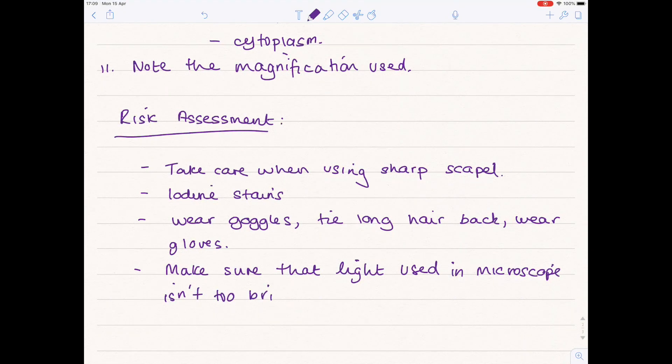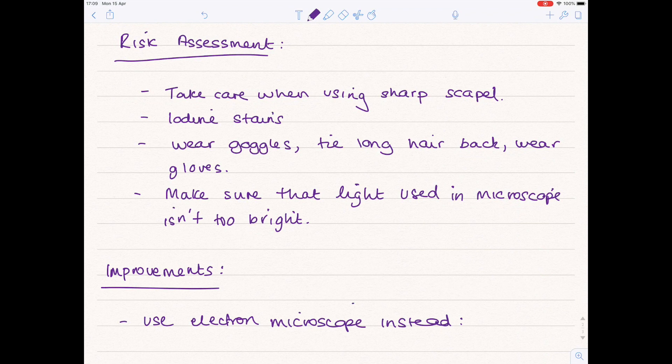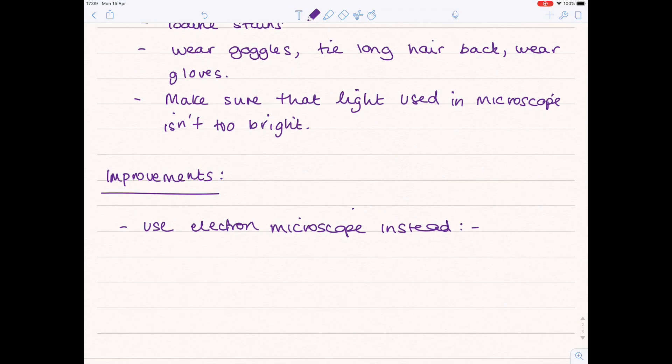If they ask you for any improvements you could make, well, a light microscope can really only magnify up to 1500 times. So in order to magnify further, you could use an electron microscope instead, because it has greater magnification powers and greater resolving powers.